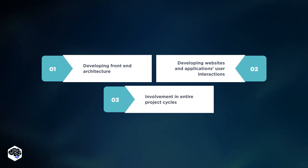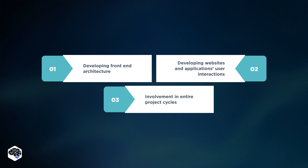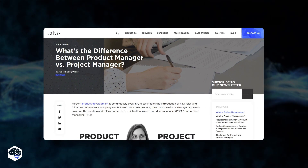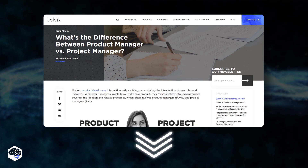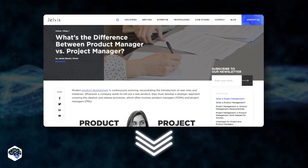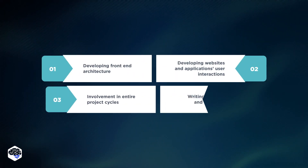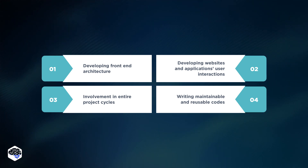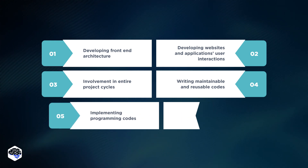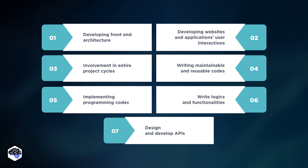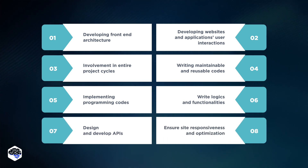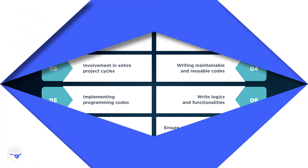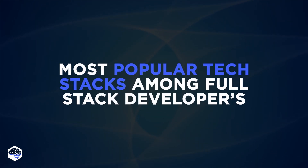Full stack developers need to keep up with modern UX standards within their industry and those of their clients. The next point is involvement in entire project cycles. A full stack developer also works closely with a project manager and product manager to plan projects. To know more about the difference between a product manager and a project manager, check out our article — the link is in the description. And the last responsibility to mention is writing maintainable and reusable code. This includes implementing programming code, writing logic and functionalities, designing and developing APIs, and ensuring site responsiveness and optimization.